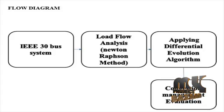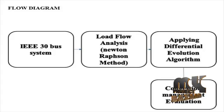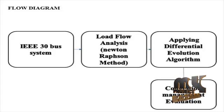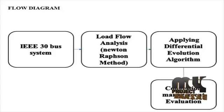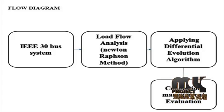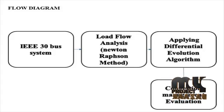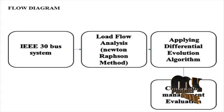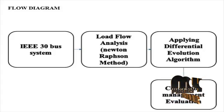The first module is the IEEE 30 bus system. It consists of six generators, 24 load buses, and 41 transmission lines. Congestion is created by outaging a transmission line and increasing the load at certain buses. Using these two processes, congestion is made.